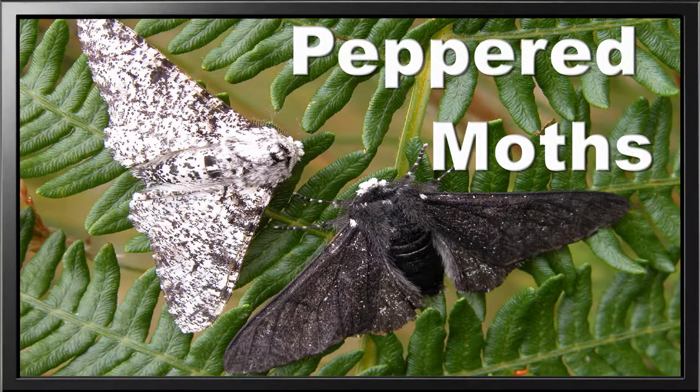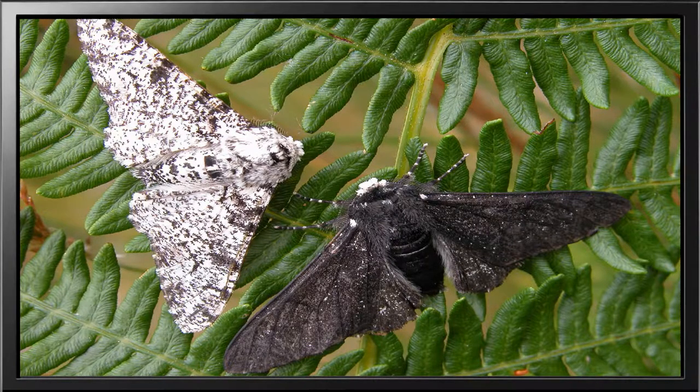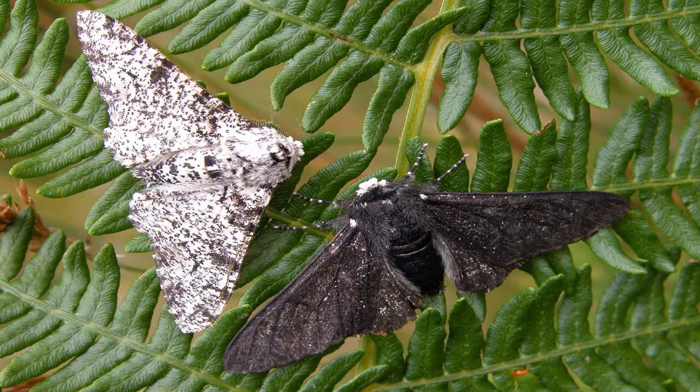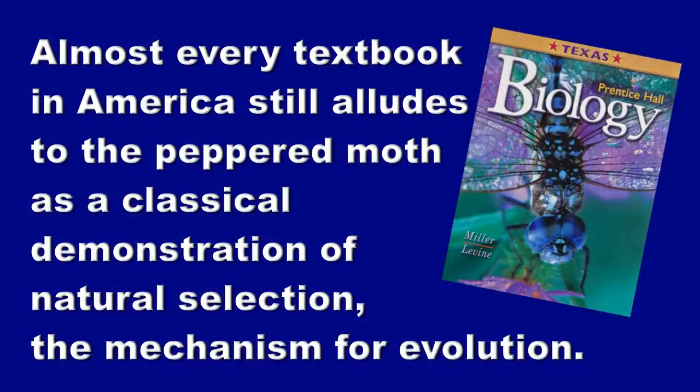The second icon we're going to study tonight is the famous peppered moths of England. They're a species of moths that can be quite different in their color — you've got a melanic form, which is dark, and a non-melanic, lighter form. Melanin is the dark pigment that causes skin to be darker. Almost every textbook in America still alludes to the peppered moths as a classical demonstration of natural selection and hence the mechanism for evolution.